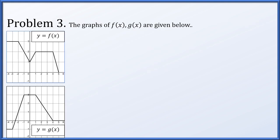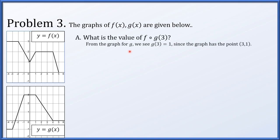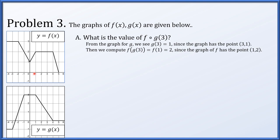Moving on. The graphs of f and g are given. What is the value of f(g(3))? The first thing we do is compute g(3). Looking at the graph for g(x), plugging in 3 corresponds to a height of 1, so g(3) = 1. Then we plug that into f: f(g(3)) = f(1). Looking at the graph for f, plugging in 1 gives 2, since (1, 2) is on this graph. So f(g(3)) = 2.